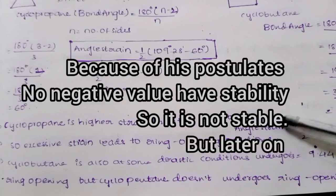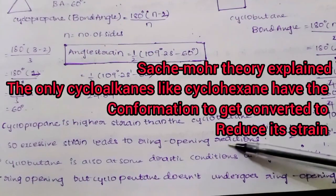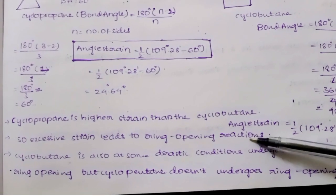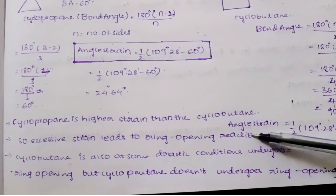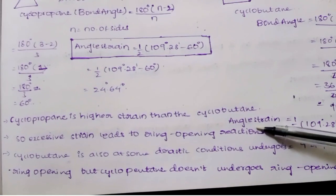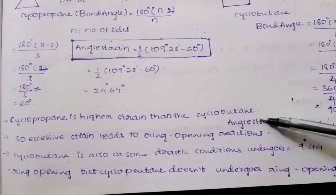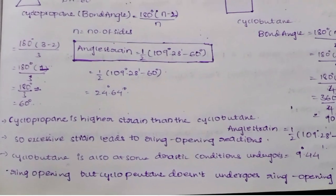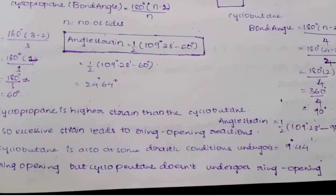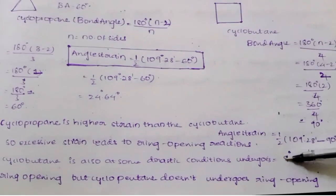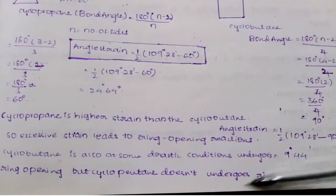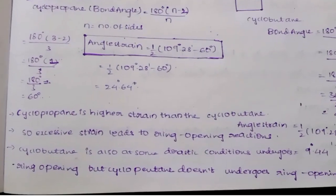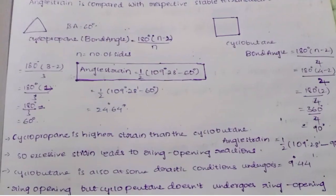Angle strain leads to ring opening reactions. Think of it like rubber — if you stretch it beyond the upper limit, it breaks. Cyclopropane has the highest strain and undergoes ring opening. Cyclobutane also undergoes ring opening, but under more drastic conditions. Cyclobutane's angle strain value is 9.44°. However, cyclopentane does not undergo ring opening because it is the most stable cycloalkane. Ring opening occurs only in cyclopropane and cyclobutane.